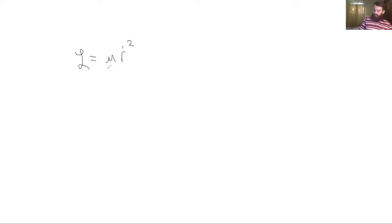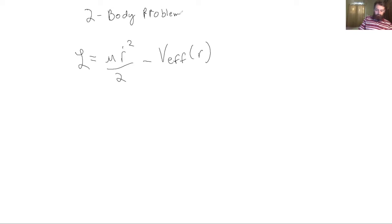In the last video, we reduced the two-body problem from a problem that had six degrees of freedom down to only a single degree of freedom that we needed to work with, and the Lagrangian for that two-body problem looked like this. We reduced it down to one parameter, that parameter being r. Today we're going to finish solving that problem now that we have this nice, easy-to-work-with Lagrangian. And in solving this two-body problem, we can start exploring things like orbits and orbital mechanics.